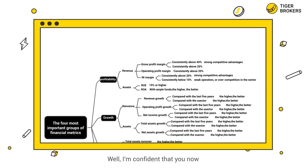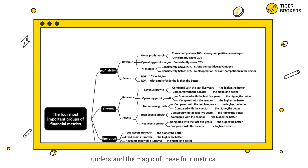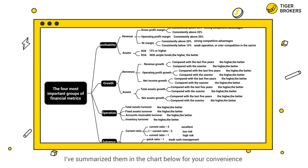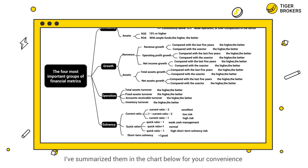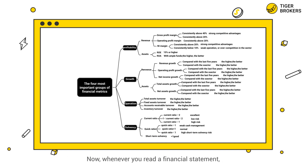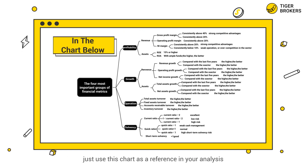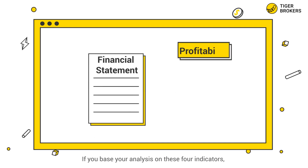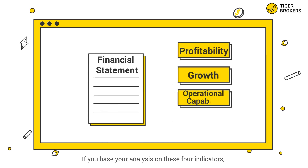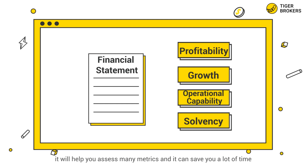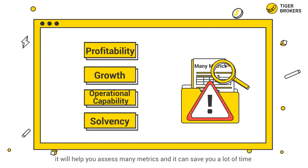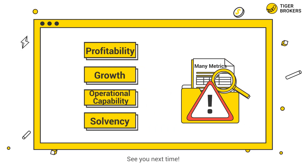I'm confident that you now understand the magic of these four metrics. I've summarized them in the chart below for your convenience. Whenever you read a financial statement, just use this chart as a reference in your analysis. If you base your analysis on these four indicators, it will help you assess many metrics and save you a lot of time. See you next time!